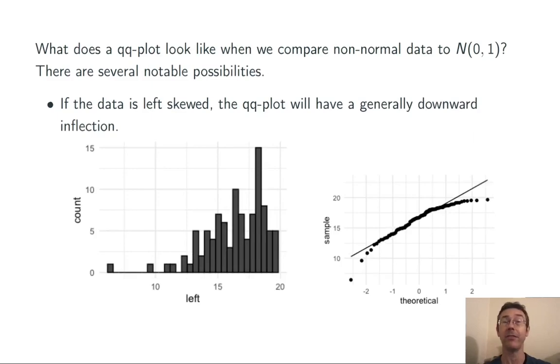By the same token, if the data is left-skewed, the QQ plot tends to have a generally downward inflection.